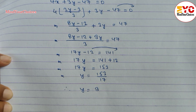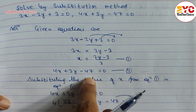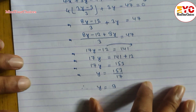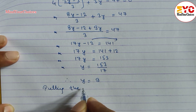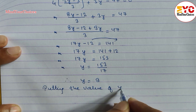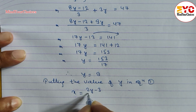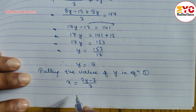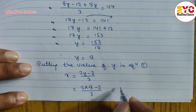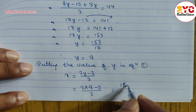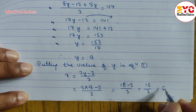Now the value of y is found. We have to find x, so we put the value of y in equation 1. x is equal to 2y minus 3 divided by 3. Substituting y equals 9: x is equal to 2 into 9 minus 3 divided by 3, which is 18 minus 3 divided by 3, which is 15 divided by 3, equal to 5.